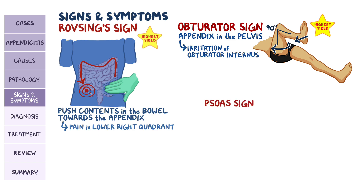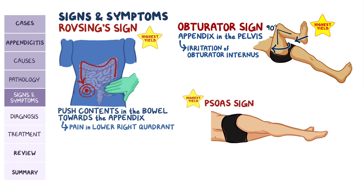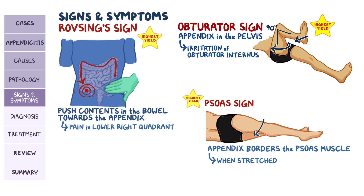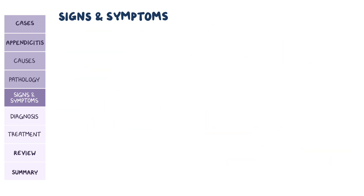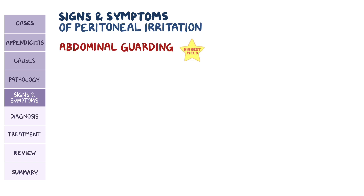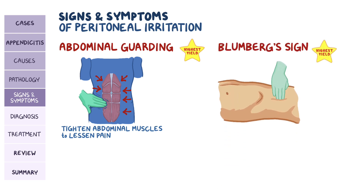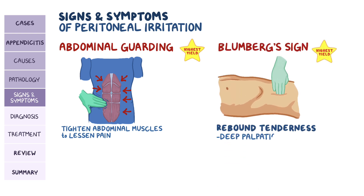Finally, we have the psoas sign, where the person lies on their left side, and the clinician extends the right hip. Since the appendix borders the psoas muscle, when it's stretched by hip extension, the friction will lead to pain. An important and early sign of peritoneal irritation is abdominal guarding, which is when an individual tightens their abdominal muscles during palpation to try and lessen the pain. Then there's Blumberg sign, also known as rebound tenderness, where a deep palpation and quick release causes pain during the release.